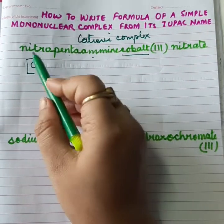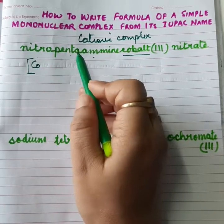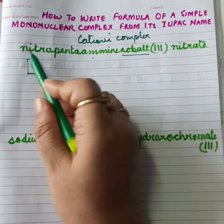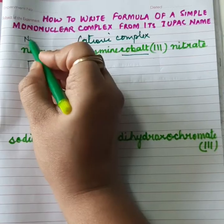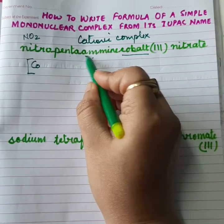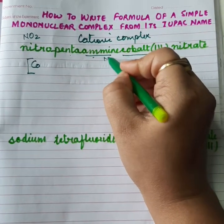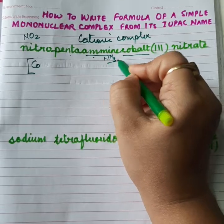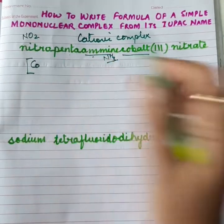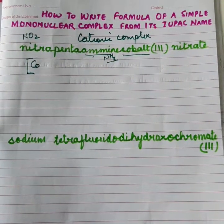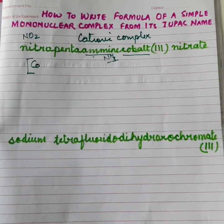Now, rest all things are ligands. You try to find out which ligands are present. Nitro is one ligand, amine is one ligand. Now, question comes in which order we will write the ligands. To write the ligands, dear students, I will tell you a simple rule.